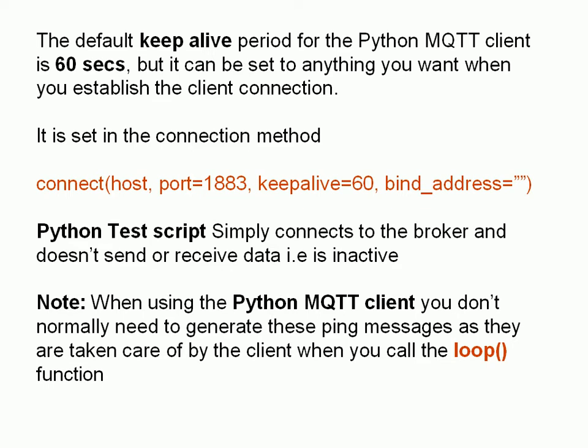The default Keep Alive period in the Python MQTT client is 60 seconds. You can change that — it's set in the connection method. Here's the code that shows you, and you can see the Keep Alive defaults to 60.